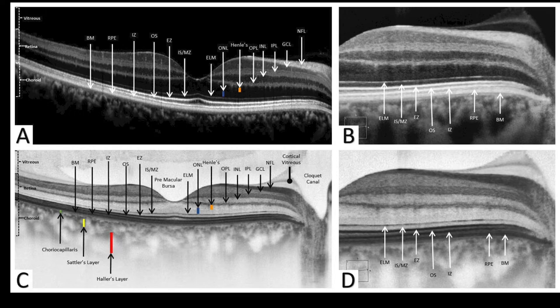Bruch's membrane and the RPE can be very difficult to distinguish. In panel C, the choroid has the choriocapillaris, then the medium-sized vessels in Sattler's layer, and then the larger vessels in Haller's layer. Choroidal thickness can vary significantly among individuals. Panel D shows even higher resolution of the structures in panel B, demonstrating that much more information is available in high-resolution images.